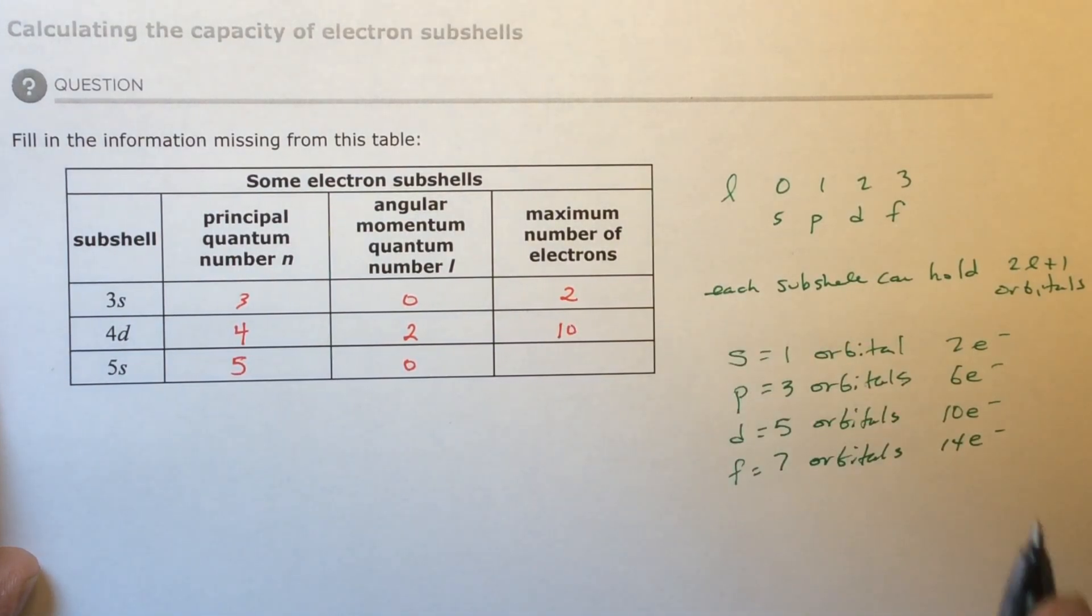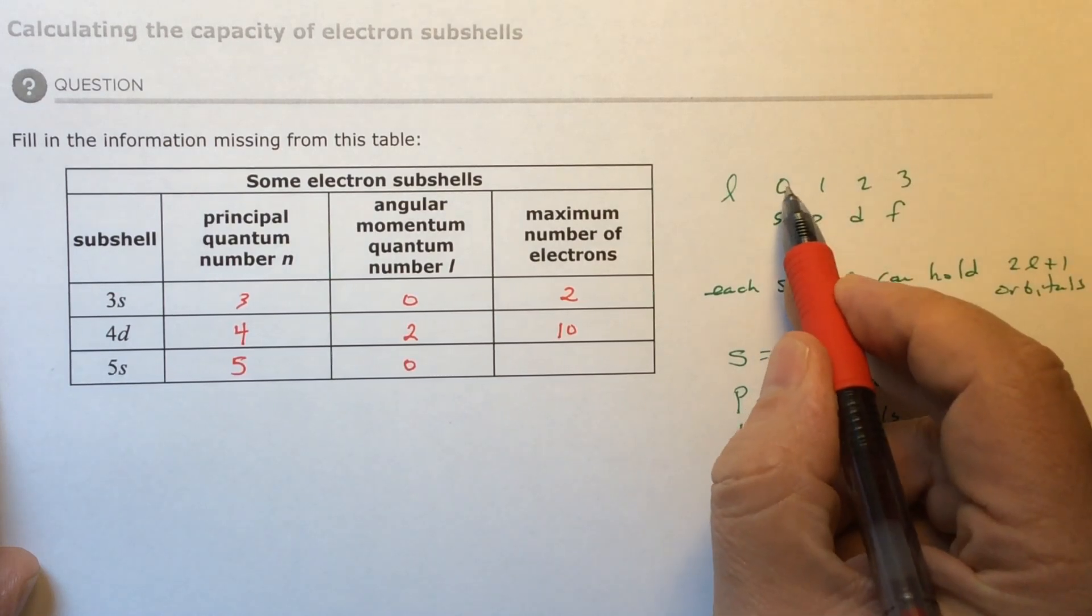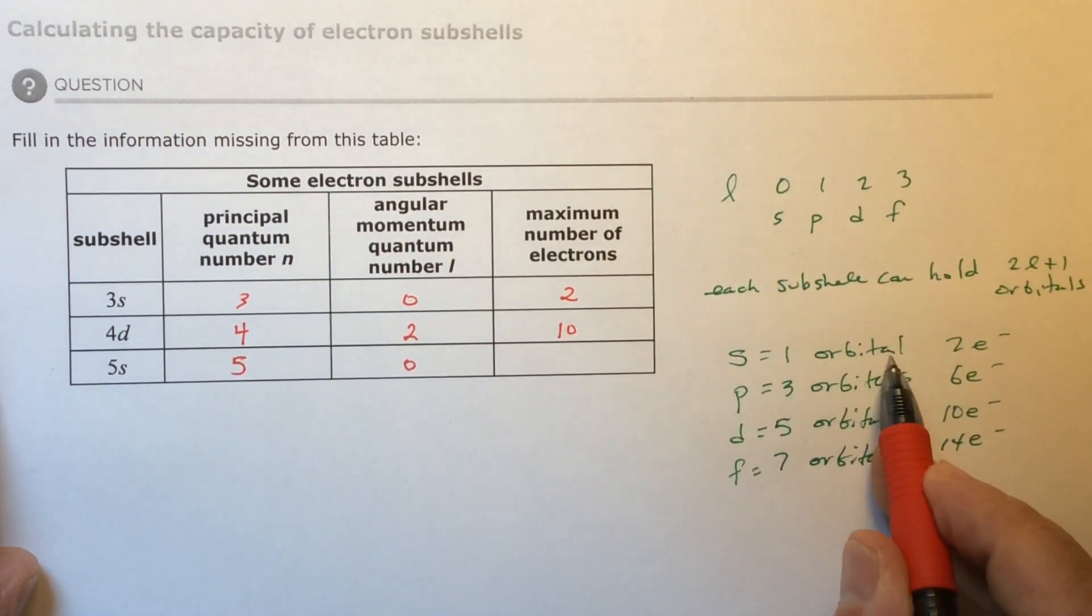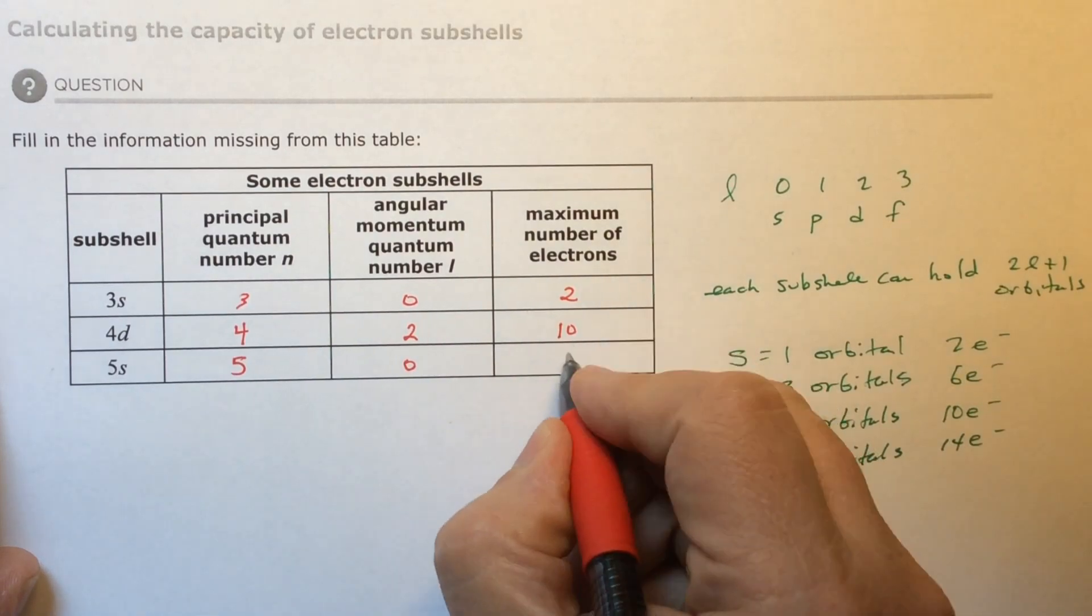And then the last one, five S, that's zero. So that's one orbital. And one orbital holds two electrons.